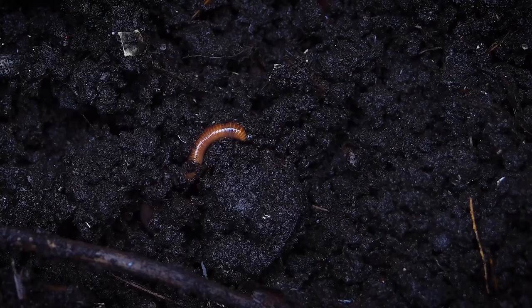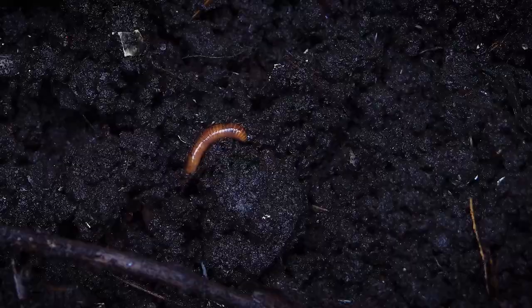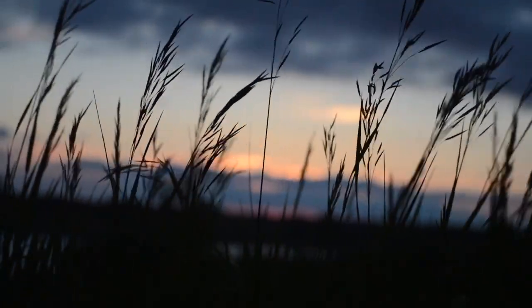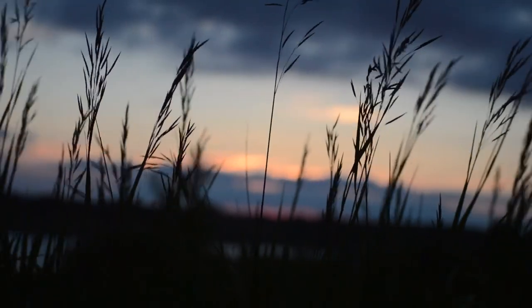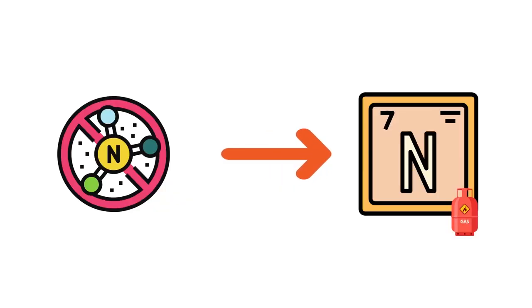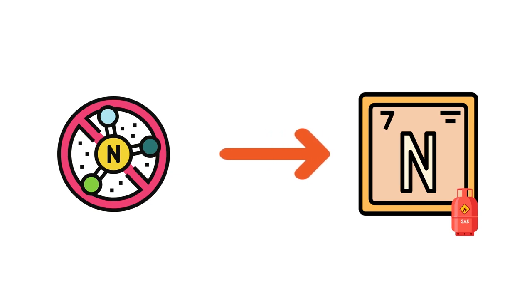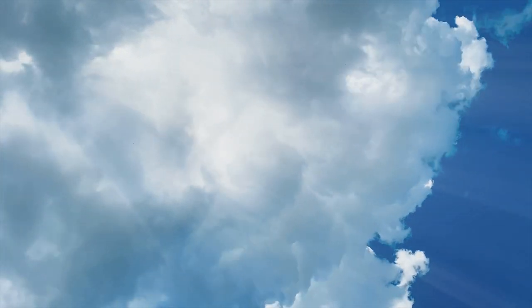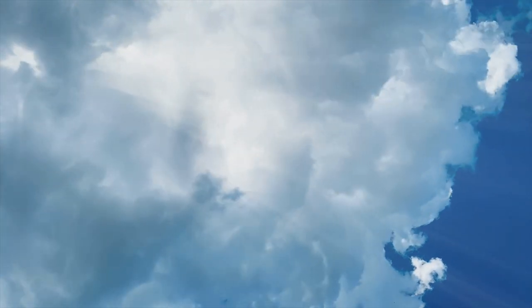And a wide variety of soil bacteria can use nitrate in place of oxygen when oxygen isn't available, converting the nitrate to nitrogen gas, which is released back into the atmosphere, completing the nitrogen cycle.